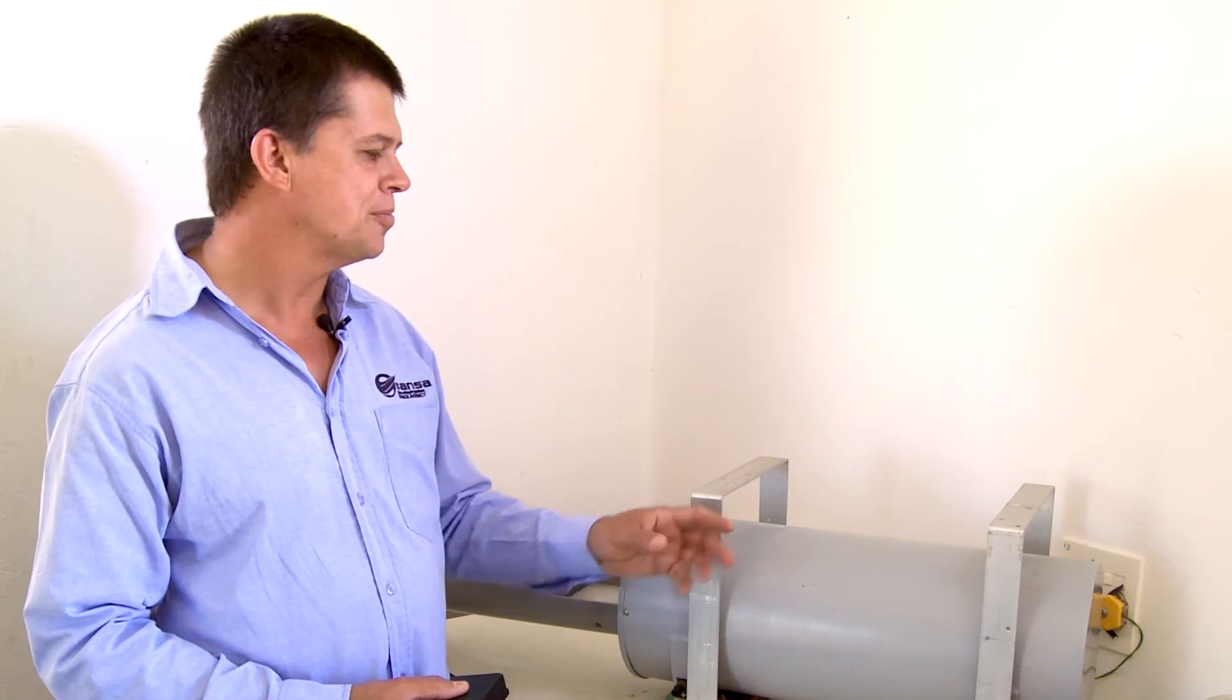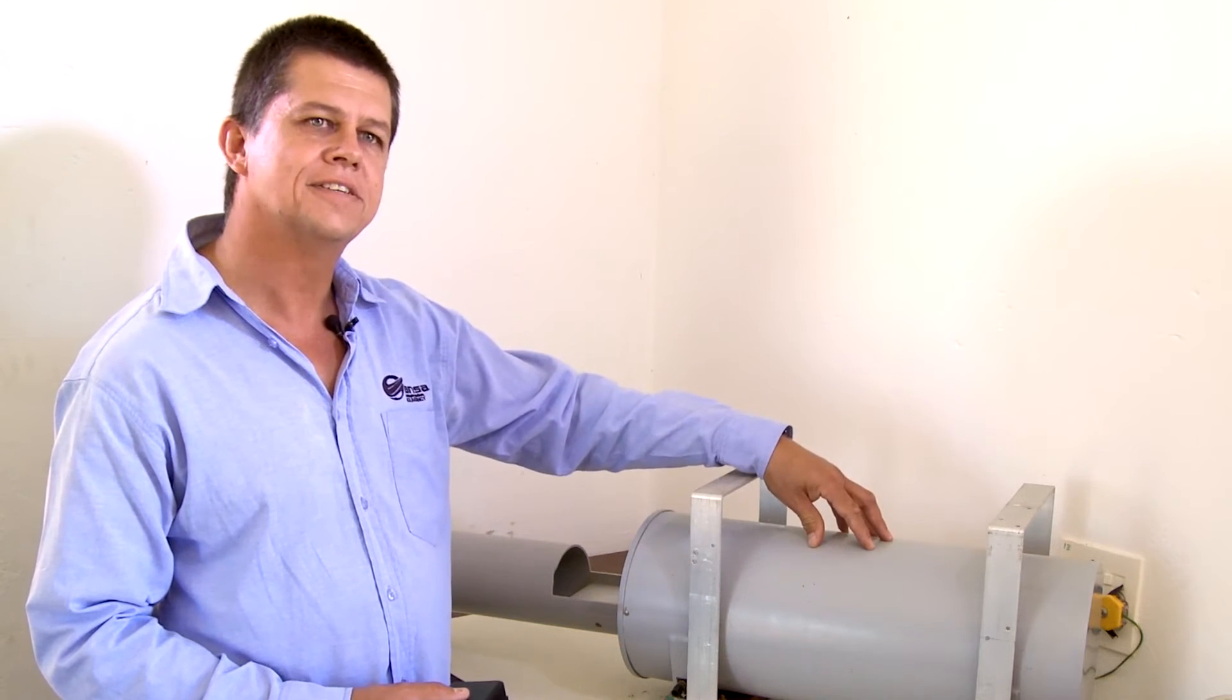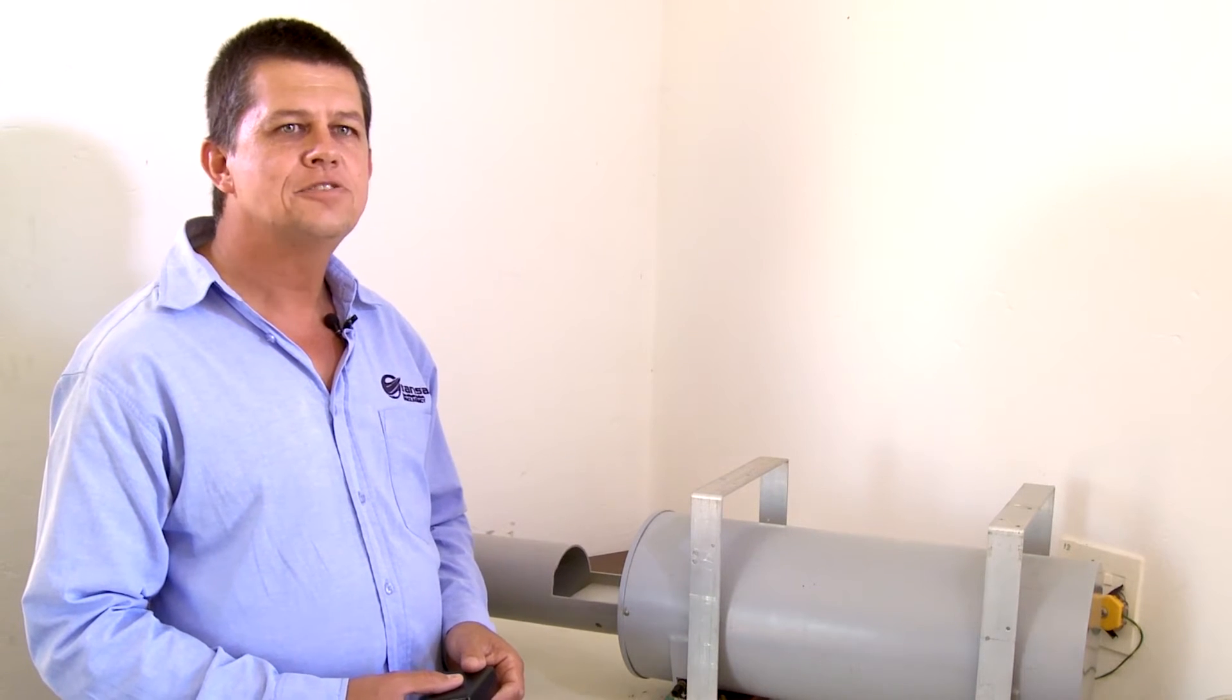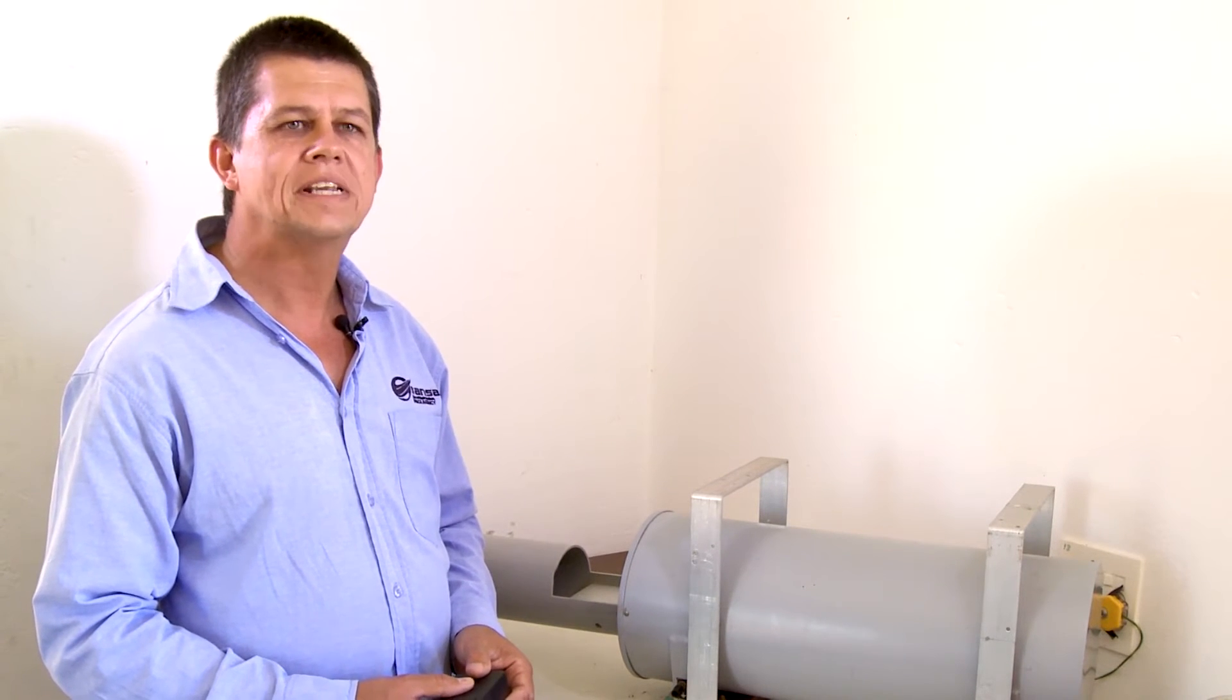This is a non-magnetic screening chamber and it basically consists out of many layers of high-permeability material on the inside. The purpose of the high-permeability material is to screen the Earth's magnetic field. Now, this chamber is used very often to determine the electronic offsets of magnetometers.